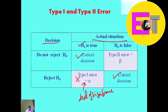Whereas when the null hypothesis is false and we accept it or fail to reject it, this is also called a type 2 error or beta error.